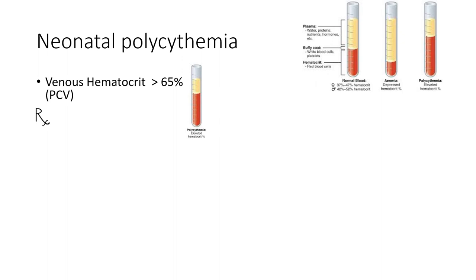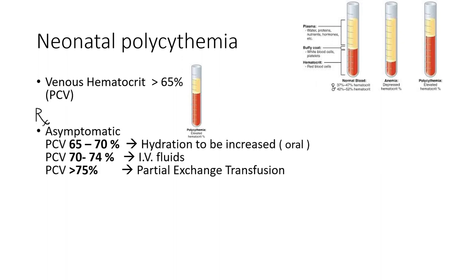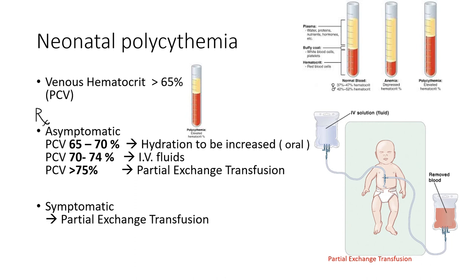For asymptomatic neonates, PCV between 65–70% requires oral hydration therapy; PCV between 70–74% requires IV fluids; PCV above 75% requires partial exchange transfusion (PET). For symptomatic neonates, urgent PET is the only option. PET involves exchanging concentrated blood with IV fluids — withdrawing blood at one site while infusing IV solution at another.